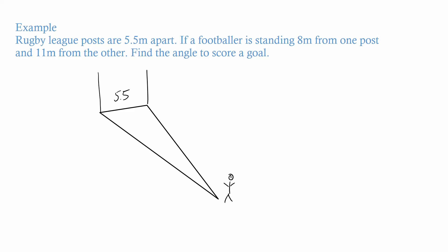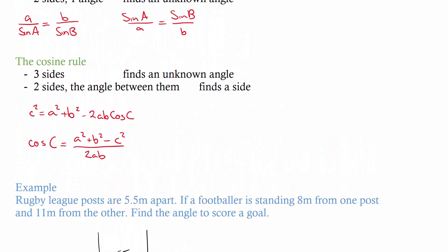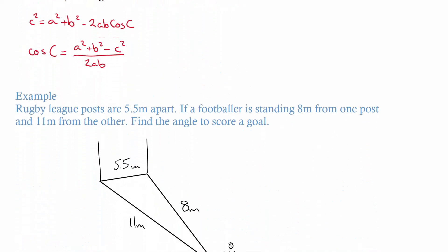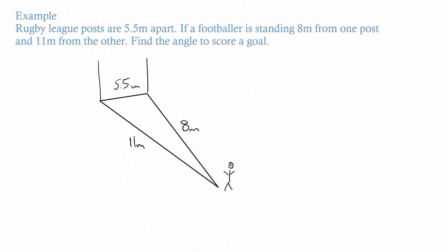Over here we have 8 meters, 5.5 meters and 11 meters. Now that we've got all that, we look at what we have. Now we have three sides. The only one that had three sides was the cosine rule, so we know we're using the cosine rule and we're trying to find this angle here.